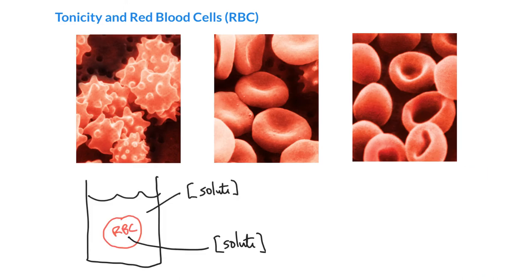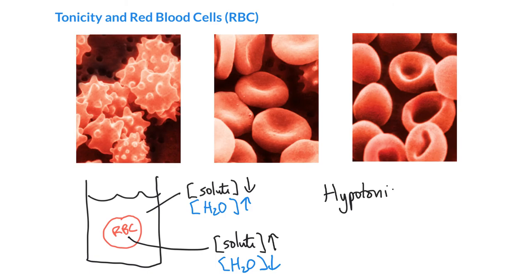Now if we look at a situation where the solute concentration is low on the outside compared to the inside of the cell — which would be relatively high — we can deduce that the water concentration on the outside has got to be pretty high compared to the inside. This kind of situation we refer to as a hypotonic solution. Hypo means under, just like a hypodermic needle goes under the skin.